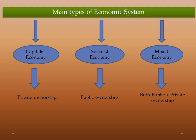Now we will look at the main types of economic systems: capitalist economy, socialist economy, and mixed economy. In a capitalist economy, there is private ownership — decisions in the economy are taken by private ownership or big capitalists. In a socialist economy, there is public ownership. And in a mixed economy, both public and private ownership exist.